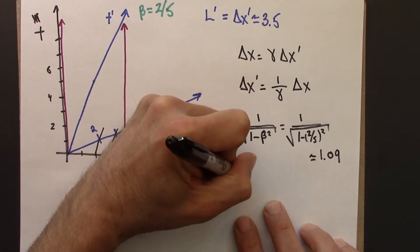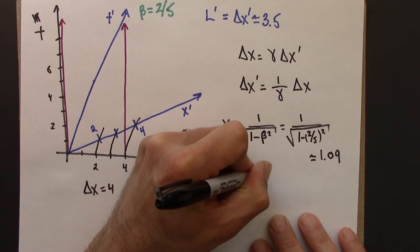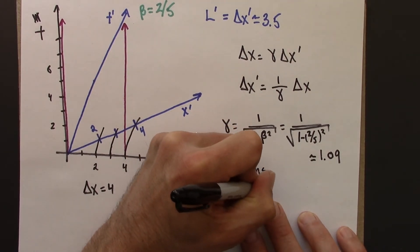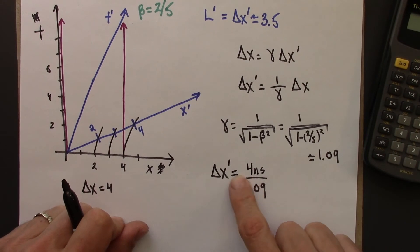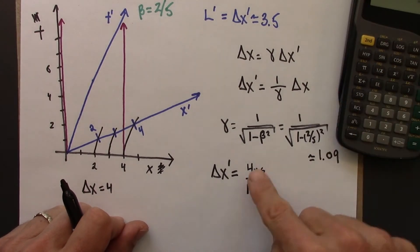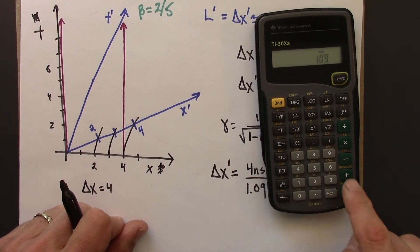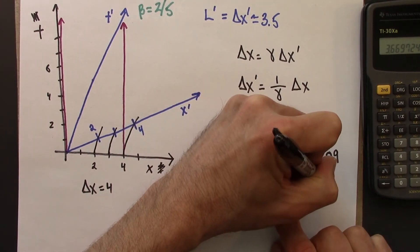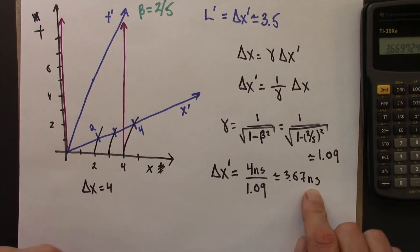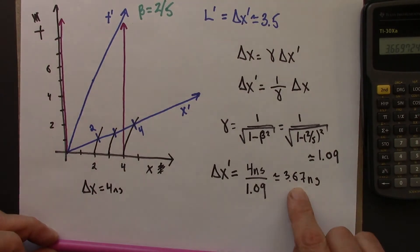Delta x-prime is delta x. That's the length in the unprimed frame. That's going to be 4 nanoseconds. I'm going to divide that by 1.09. And let's use a calculator for that. This is a number larger than 1. So I'm going to get a delta x-prime of a little less than 4. It's going to make this number smaller. Let's see. 4 divided by 1.09 is 3.67. So what this shows is that in Beowulf's frame, the length of this is not 4 nanoseconds, but 3.67 nanoseconds. So in the moving frame, the length has contracted.